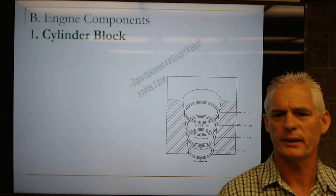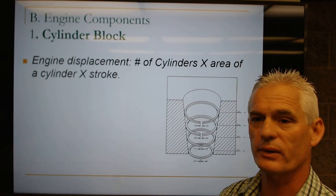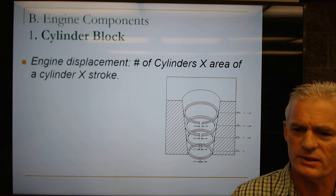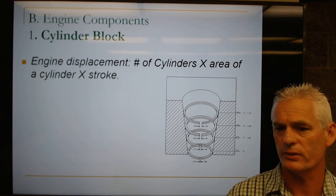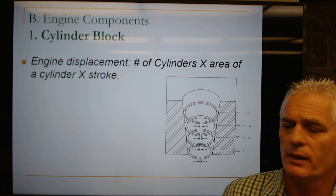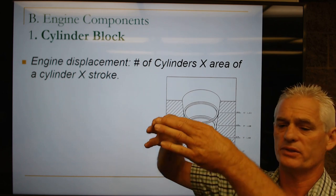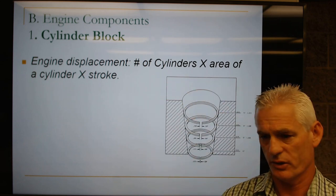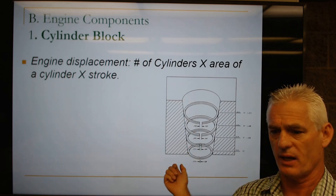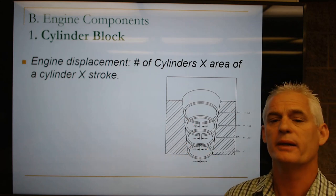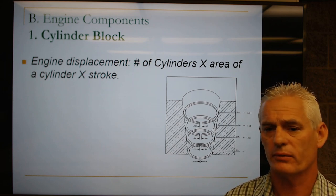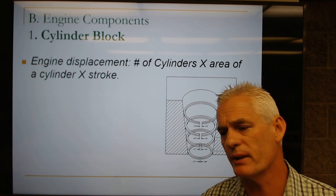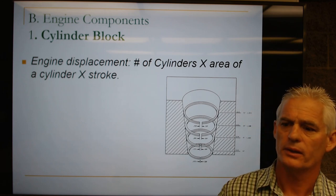Let's talk about the cylinder block. Engine displacement is the number of cylinders times the volume of each cylinder. The volume is found by pi r squared — the area of the circle — times the stroke, which is the height. That gives you the volume of one cylinder. If we have eight cylinders, we multiply by eight. We usually think in cubic inches and convert: 61.4 cubic inches equals one liter.